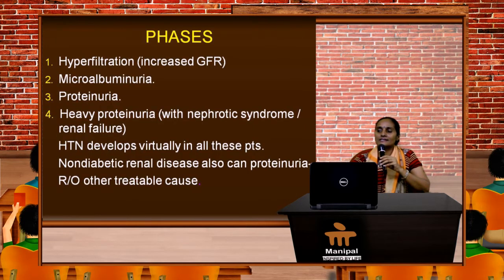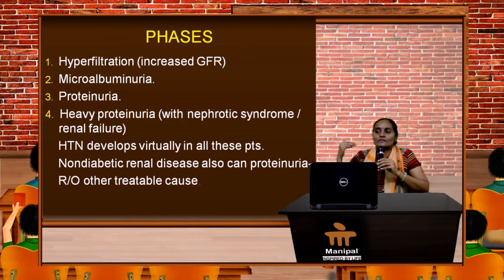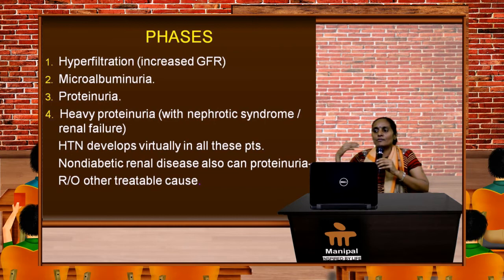Looking at the phases — hyperfiltration at this stage: in fact there could be a slight increase in the size of the kidney, sometimes called nephromegaly, but this is very transient. At this stage there is an increased glomerular filtration rate, then microalbuminuria, then heavy proteinuria with nephrotic syndrome or renal failure.